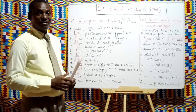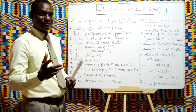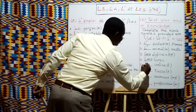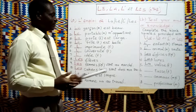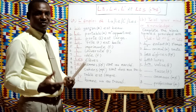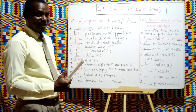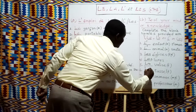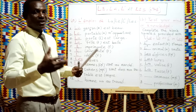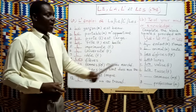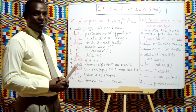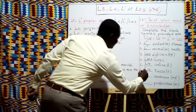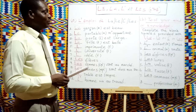Number five: blank valise — briefcase. The answer is La valise, because valise is feminine singular. Number six: blank tasse — drinking cup. The answer is La tasse. Number seven: blank animaux — the answer is Les animaux, because animaux is masculine plural.